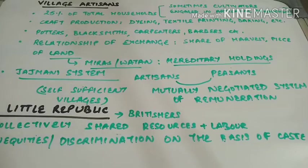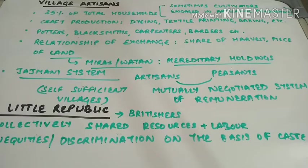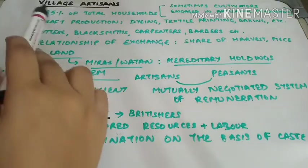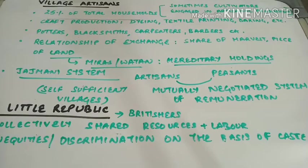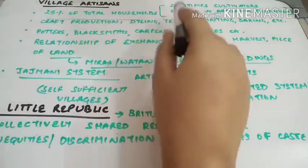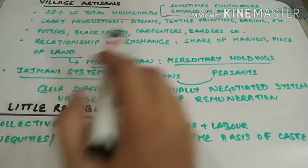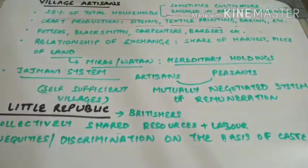Coming on to the topic of village artisans — apart from cultivators, there was also this group of people who were artisans, known in Hindi as karigar. Different records state that in some villages, the number of artisans was so high that almost 25% of the total households of the village were artisans. They resorted to activities like dyeing, textile printing, baking, etc.